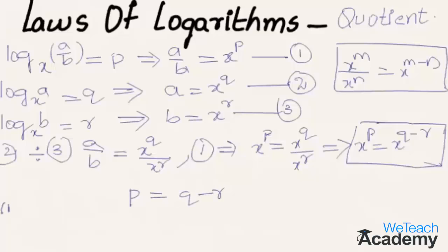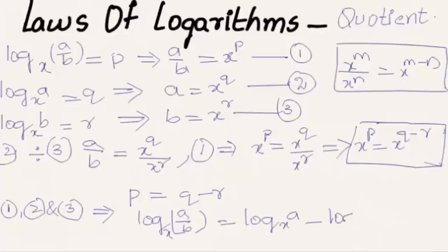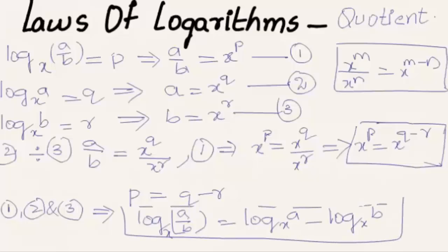Using equations 1, 2, and 3 for the values of p, q, and r, we get log a/b to the base x equals log a to the base x minus log b to the base x. This is the law of logarithm of a quotient.